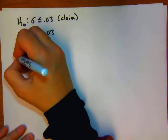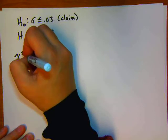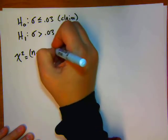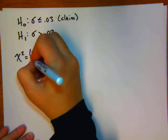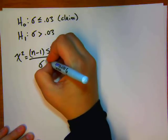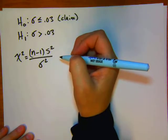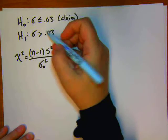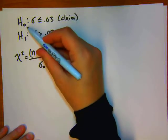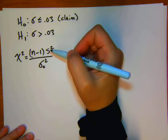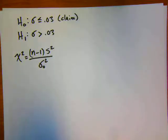The next step in the p-value method is to find the test statistic. The test statistic is the degrees of freedom times the sample variance, all divided by the hypothesized variance — sometimes written with sigma-naught squared in the denominator to indicate we're looking at the null hypothesis value. We don't have n or s yet, so we need to plug the data into our calculator.